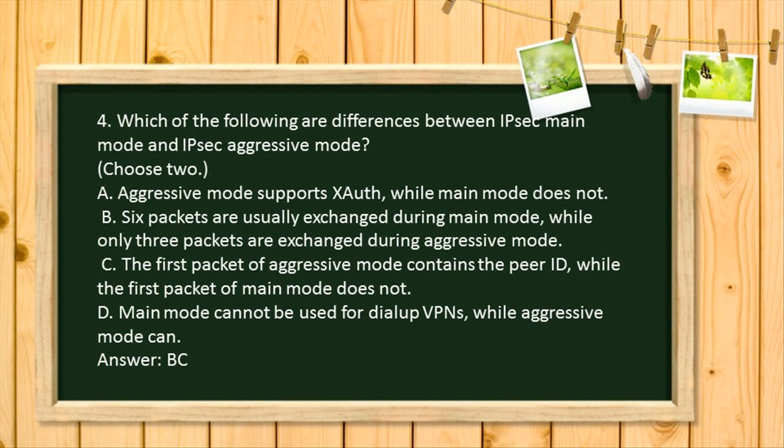C. The first packet of Aggressive Mode contains the Peer ID, while the first packet of Main Mode does not. D. Main Mode cannot be used for Dialup VPNs, while Aggressive Mode can. Answer: B, C.